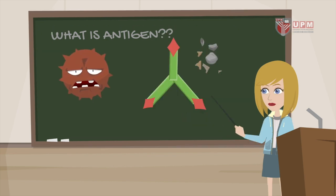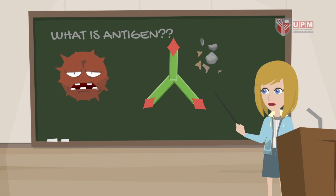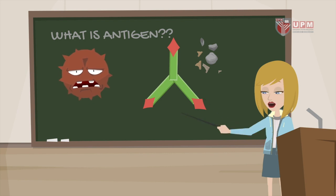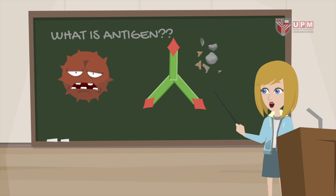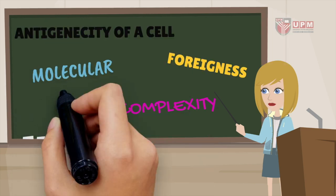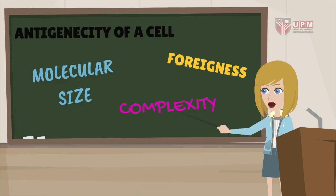Antigens are foreign substances that are presented on the surface of microorganisms. They are usually made up of large molecules of proteins that provoke the immune system. Antigenicity is the ability of an antigen to interact specifically with its specific free antibody.